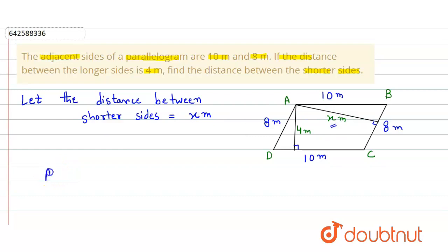So here we know that the formula for the area of a parallelogram is base times height or altitude. So here we use this formula two times, once with respect to the longer side and then once with respect to the shorter side.